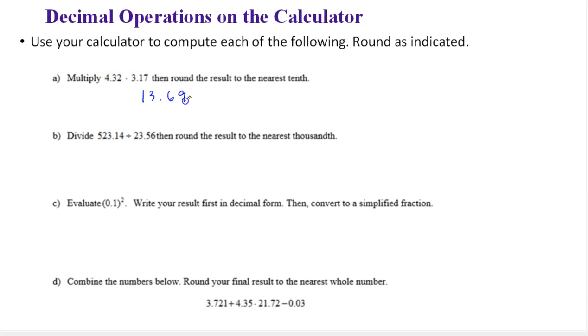Okay, this is not the rounded answer. But then to round to the nearest tenth, which is one decimal place, I want to round to this place value. This is bigger than 5, so I have 13.7.